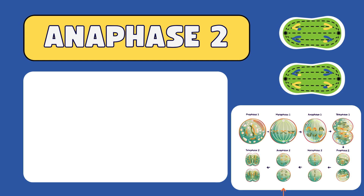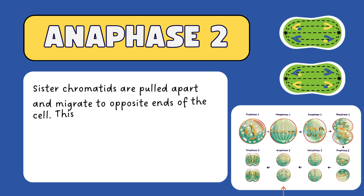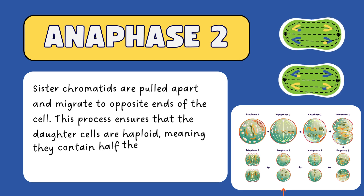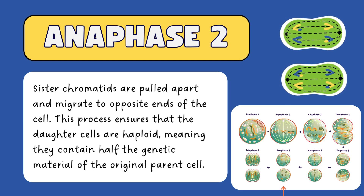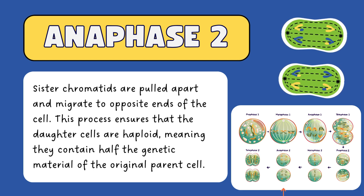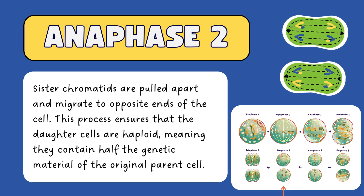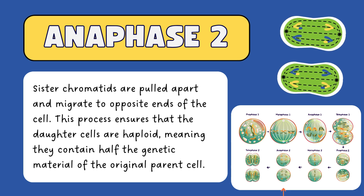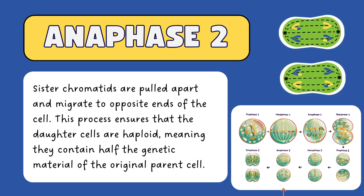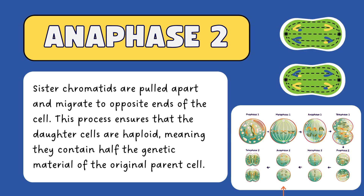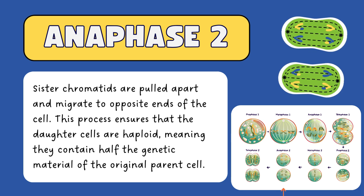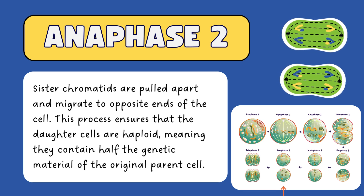During anaphase II, the sister chromatids are pulled apart and migrate to opposite ends of the cell. This ensures that the daughter cells are haploid, containing half the genetic material of the original parent cell.